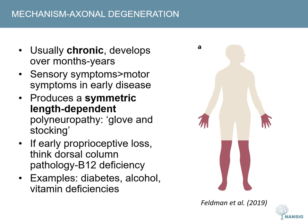With disease progression, motor symptoms will start to develop distally as well, often beginning with reduced reflexes and then muscle weakness. Examples of this sort of chronic symmetric polyneuropathy include diabetes, alcohol and vitamin deficiencies.